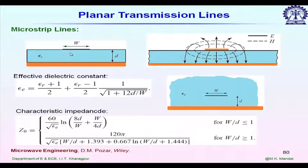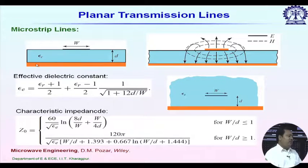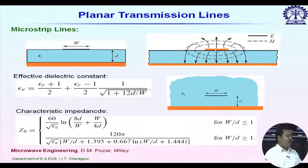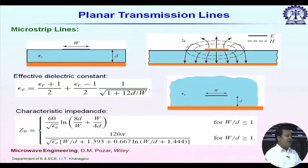Let us discuss the basic characteristics of a microstrip line and the different sources of losses. This first figure shows the cross-section of a microstrip line. We have a top metallic strip sitting on a dielectric layer, and below we have a ground plane. This is the plot of electric field and magnetic field — most of the electromagnetic energy is confined inside the dielectric. Below the strip we have some fringing fields in air, making it a semi-open structure. We cannot place any other structure like a packaging wall too close to the central strip without affecting its characteristics.